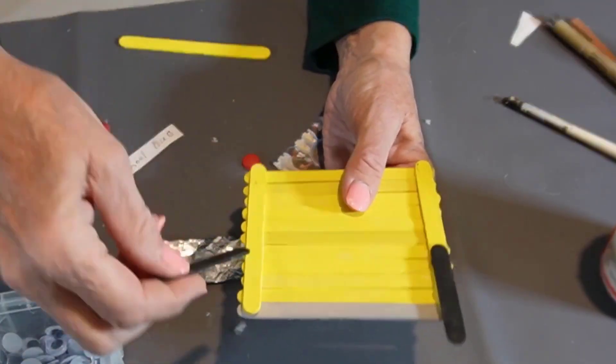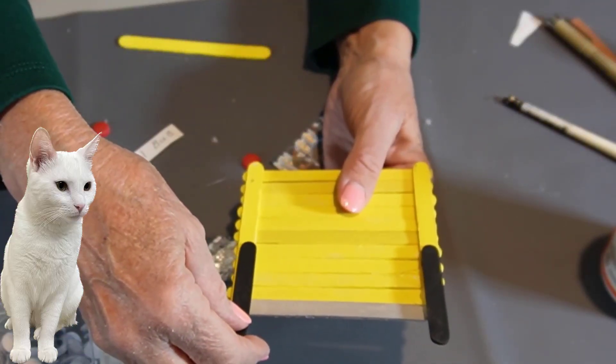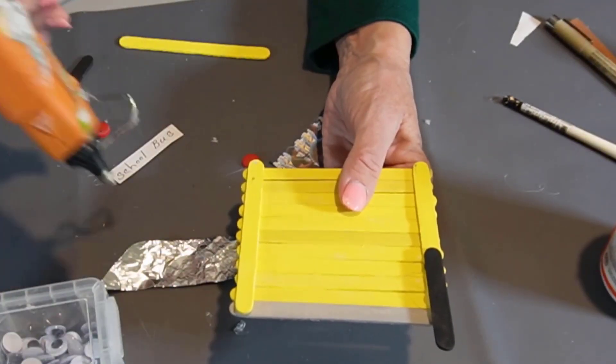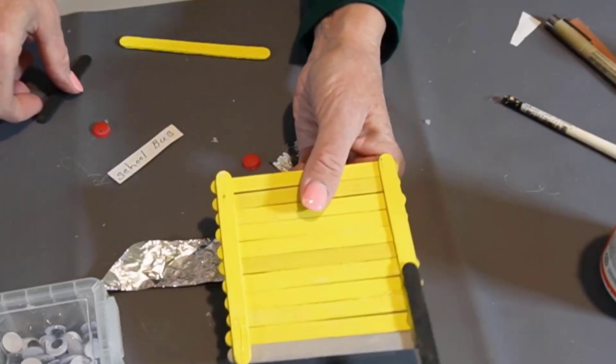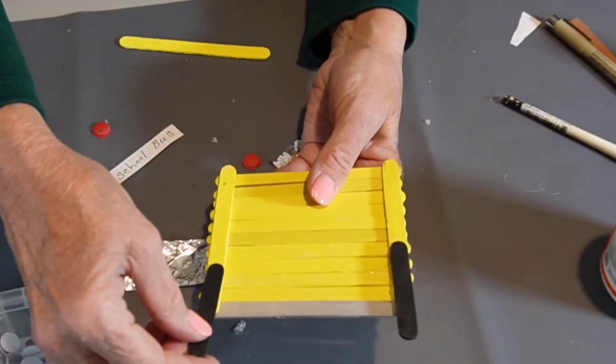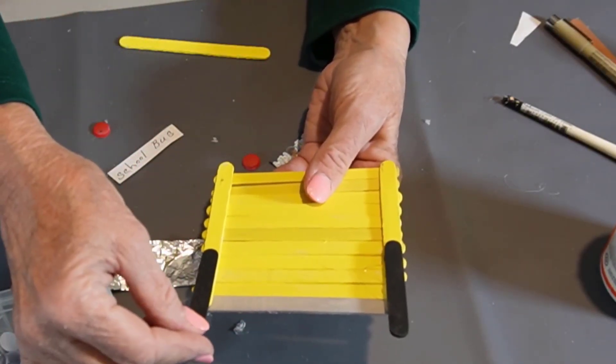And then I'm going to put a black one down here because it's supposed to be a little bit like wheels of the School Bus. I'll try to line it up to the other black one from the other side. I think we've got the same length here.